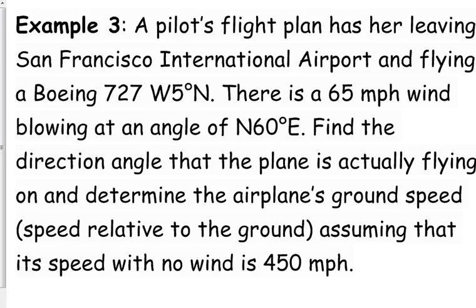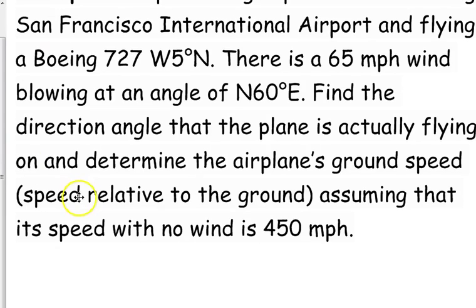Y'all are intelligent people. Study a map. All right, there's a 65 mile per hour wind that is blowing at an angle of north 60 degrees east. Let's find the direction angle that the plane is actually flying on and determine the airplane's ground speed, assuming that its speed with no wind is 450 miles per hour. As per usual, let's set up.